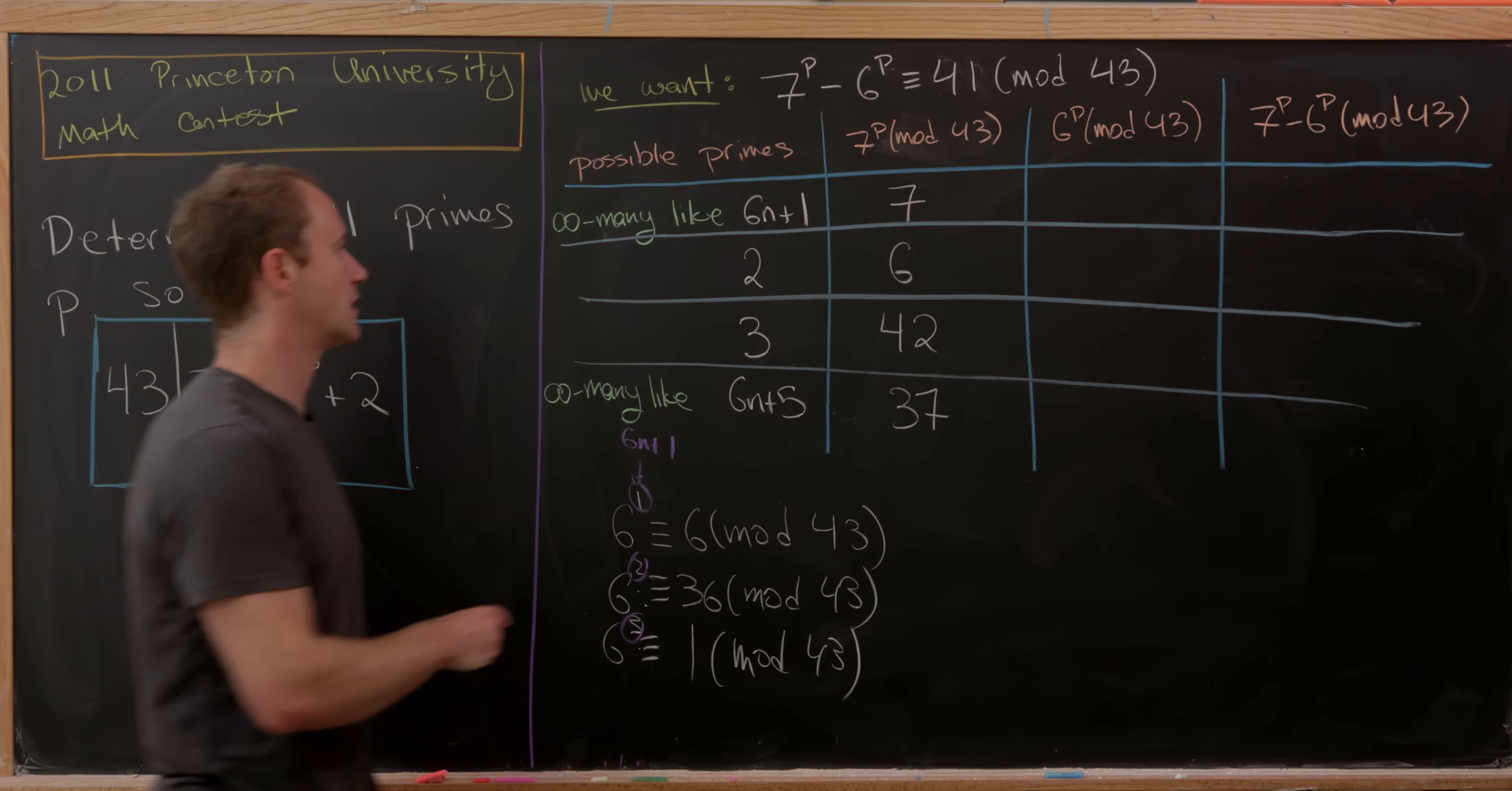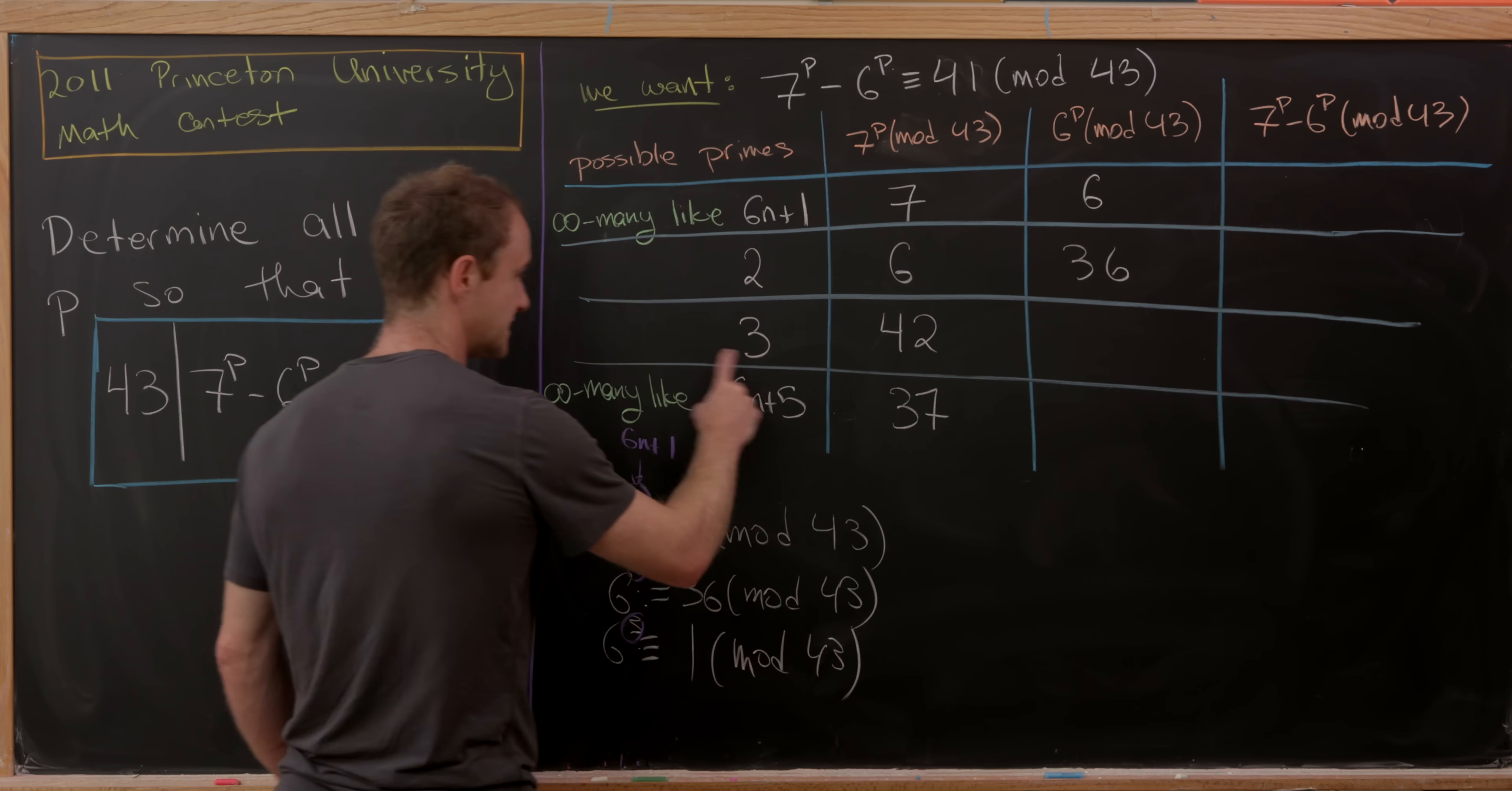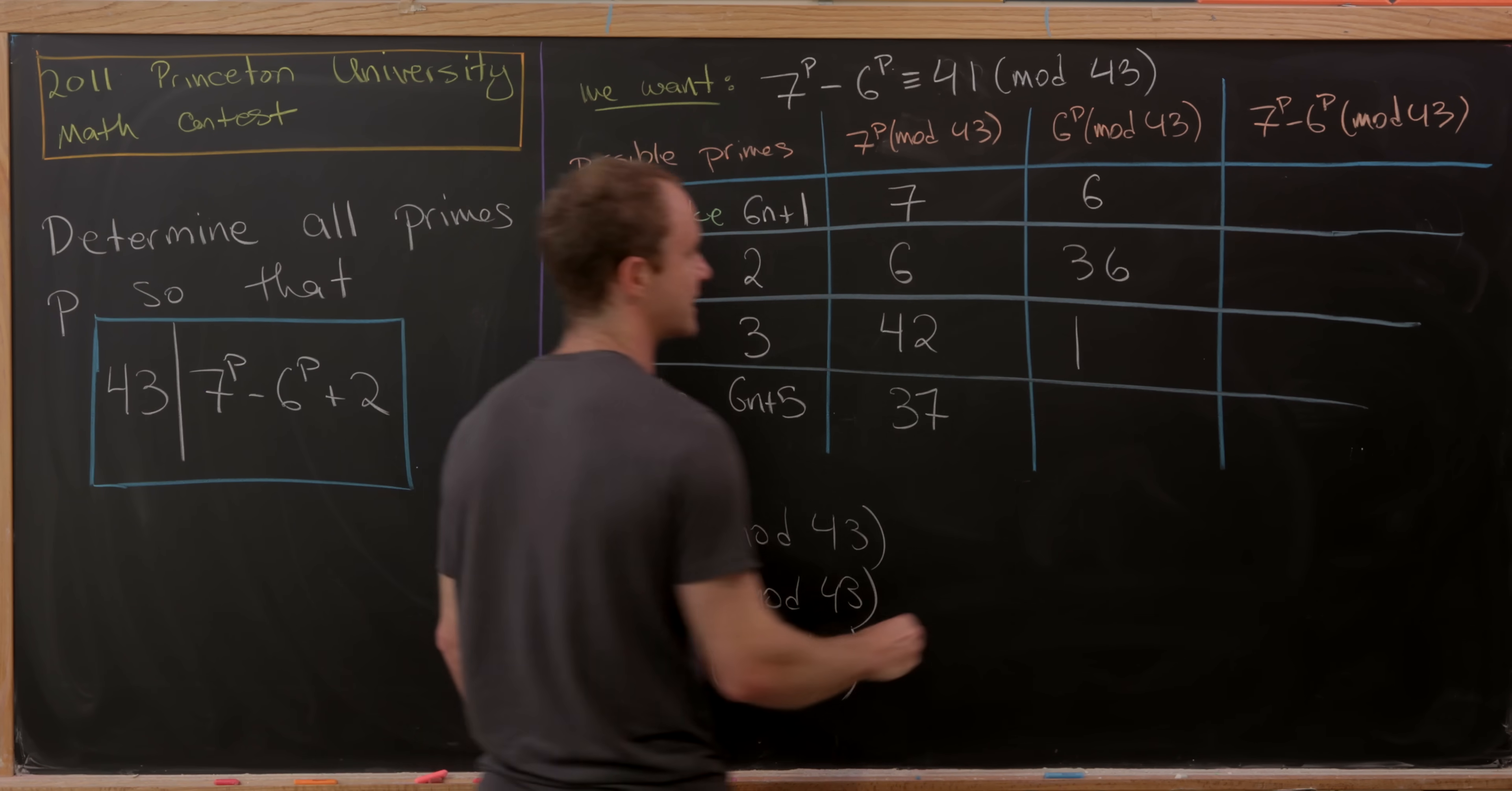To fill this chart in, everything of the form 6n+1 will give us the number 6. Everything of the form 6n+2, which is the number 2, will give us 36. 6n+3, which is simply the number 3, will give us 1. And then 6n+5, which loops back around to this one right here, will give us 36 again.